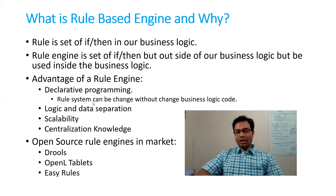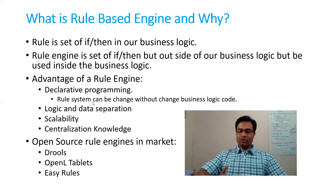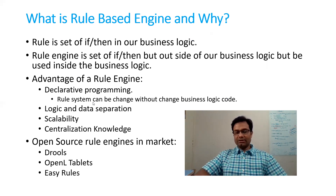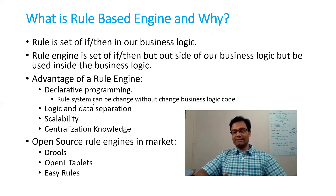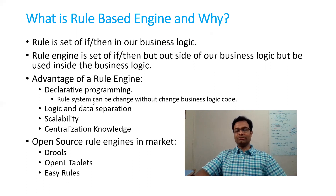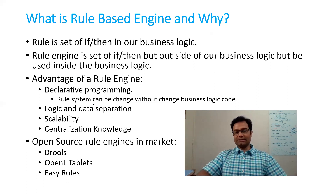Let me give an example. You must have heard that when Amazon or Flipkart sales come, product prices change and discounts change. Any Paytm, any Google Pay — they give offers depending upon the festival. See how flexible they are — they can change the business logic immediately, overnight. How is that possible? That is possible through the rule engine. The code is separate and the rules part is separate.